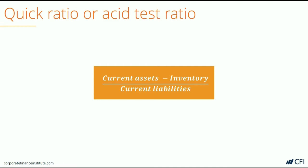The quick ratio is the same as the current ratio, except that it excludes inventory, and thus is a more conservative measure of liquidity. This ratio is more cautious as it recognizes that inventory, in many cases, can't be readily converted into cash.